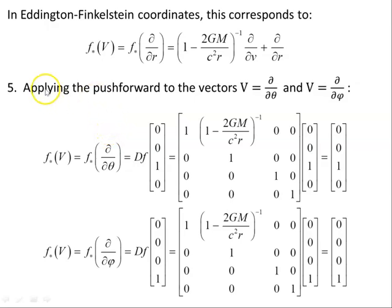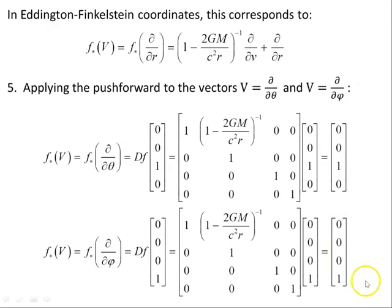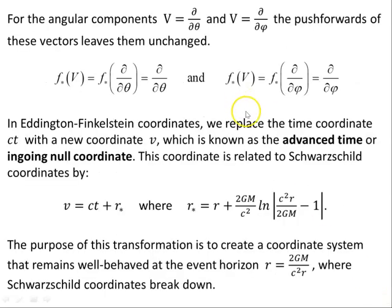For completeness, let's look at the two angular variables: the push forward from Schwarzschild to Eddington-Finkelstein of ∂/∂θ and ∂/∂φ. Applying the push forward to both — for θ we have the column vector (0, 0, 1, 0) and for φ, (0, 0, 0, 1). Multiplying the Jacobian with each of these gives us ∂/∂θ and ∂/∂φ respectively. There is no change for the angular variables — it's the time and radial components that are affected in going from Schwarzschild to Eddington-Finkelstein.